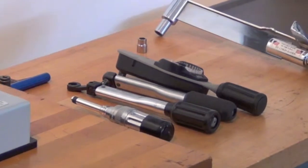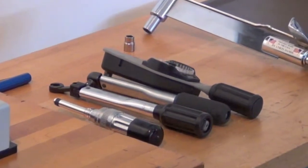Can you tell which, if any, of these torque wrenches are out of spec just by looking at them?